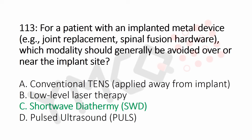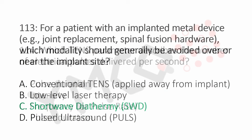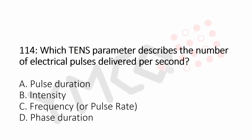Question number 114: Which TENS parameter describes the number of electrical pulses delivered per second? Option A: pulse duration. Option B: intensity. Option C: frequency. Option D: pulse duration. And the answer is Option C: frequency.